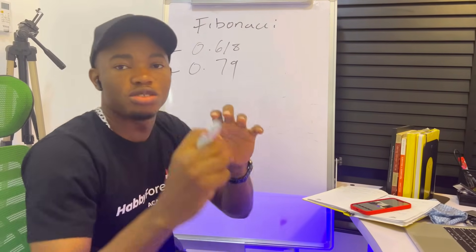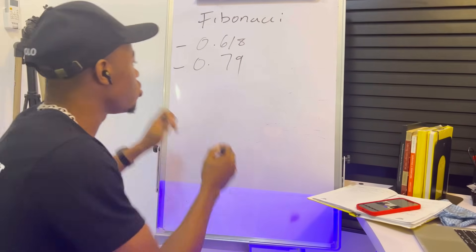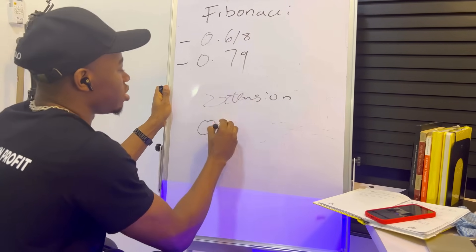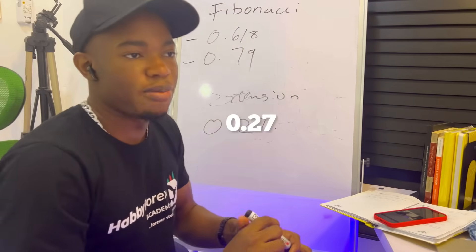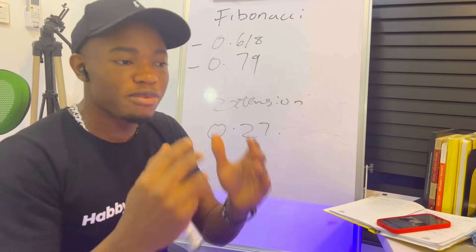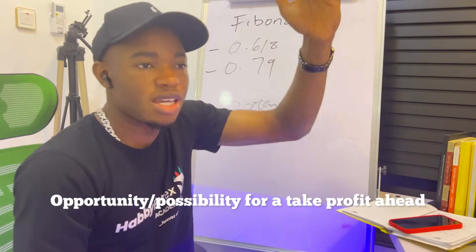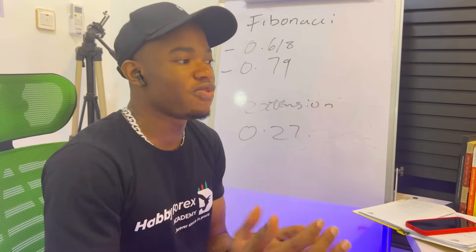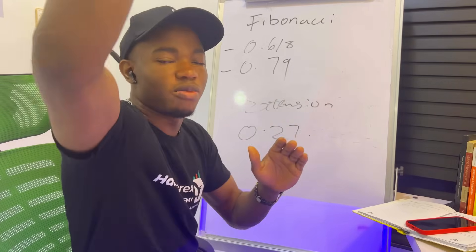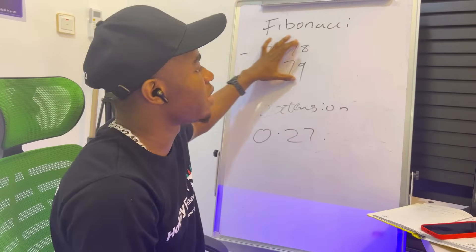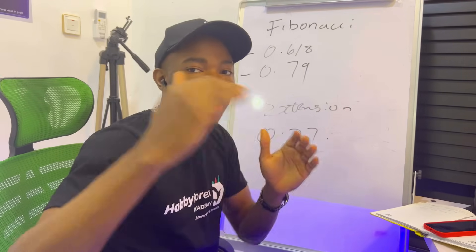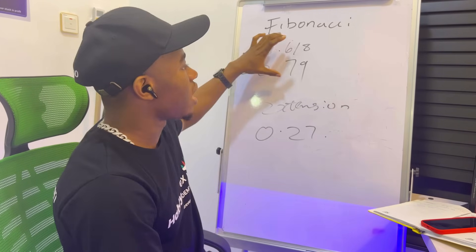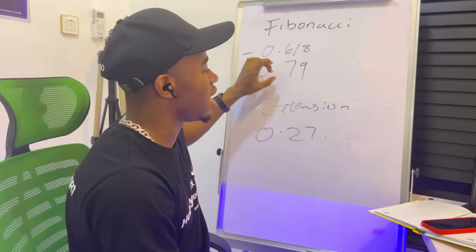These two levels — 0.618 and 0.79 — are where I try to get my entry in between. We also have the extension, which is the -0.27. The extension simply means an opportunity for a take profit — a possibility for a take profit higher. Whenever you plot your Fibonacci, it automatically gives you an extension. This extension is where you see a higher number like -0.27. The retracement levels are 0.618 and 0.79, and that's why I don't enter trades at the 0.50.